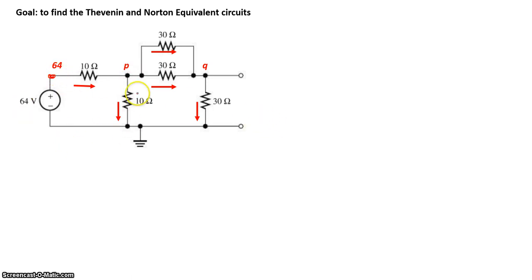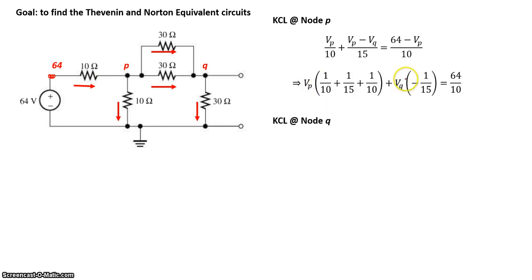So let's draw the direction of the current and basically apply nodal analysis. So current coming into node P is equal to current coming out. So, 64 minus VP over 10, so that's the current going down, plus 64 minus VP minus VQ divided by 15, which is this, equals current coming into the node, which is 64 minus VP divided by 10 ohms. That gives us, if we rearrange everything, we get the following equation.